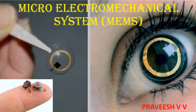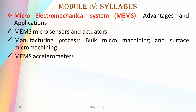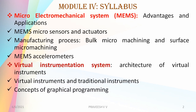Hi and welcome to this video on industrial instrumentation and automation. In this video I will be discussing about micro electro mechanical systems or MEMS. This is the fourth module, first portion on MEMS. We will discuss the introduction, advantages, and applications of micro electro mechanical systems, micro sensors and actuators, manufacturing processes, and MEMS accelerometers.